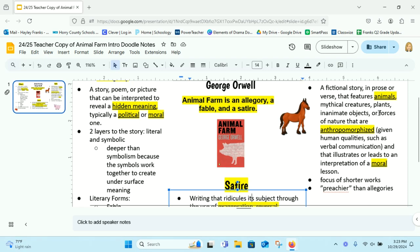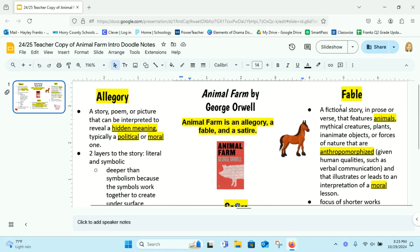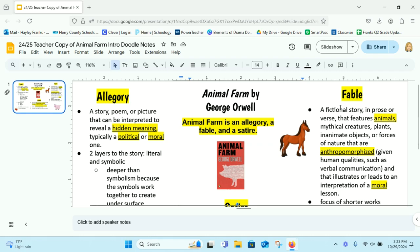forces of nature that are anthropomorphized, which means given human qualities, such as verbal communication, and that illustrates or leads to an interpretation of a moral lesson. Essentially, a fable is a fictional story where they are using not just humans, but animals, mythical creatures, centaurs, things like that, plants,